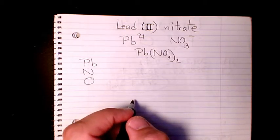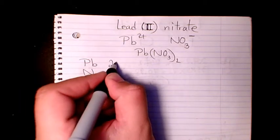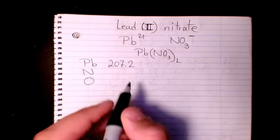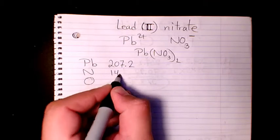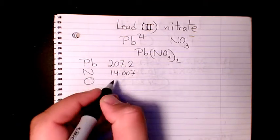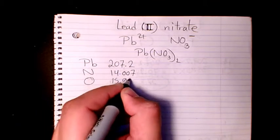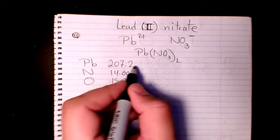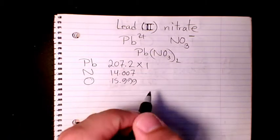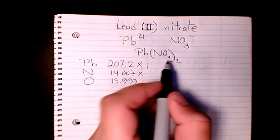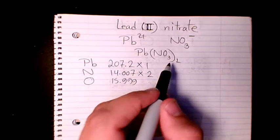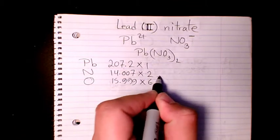Then I need to find out the atomic mass of each of these elements using the periodic table. So Pb is 207.2, nitrogen is 14.007, and oxygen is 15.999. Pb is one, we have only one element of Pb. Nitrogen we have two of them, and oxygen we have two times three, six of them.